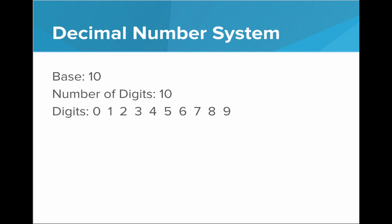Let's try to represent some numbers using only these digits. Starting at 0 and counting up: 0, 1, 2, 3, 4, 5, 6, 7, 8, 9 — but now we have to represent 10. We don't have a symbol for that; we don't have a digit to represent 10. So what do we do? We push the 9 over, put a 1 in front, and set everything after it to 0, with the understanding that this new place to the left is worth 10 times as much as the previous. We now have the 1s place and the 10s place.